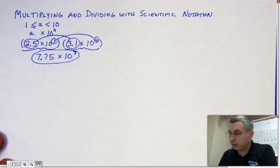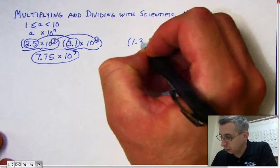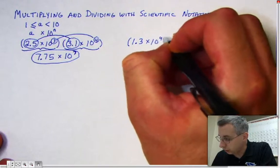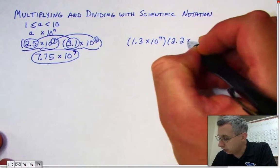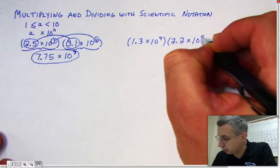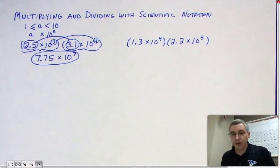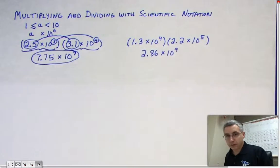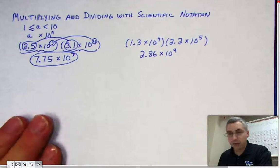Now I'd like you to try one. Please multiply 1.3 times 10 to the fourth by 2.2 times 10 to the fifth. Press pause and try this, and once you have an answer, press play again. Hopefully you got 2.86 times 10 to the ninth.